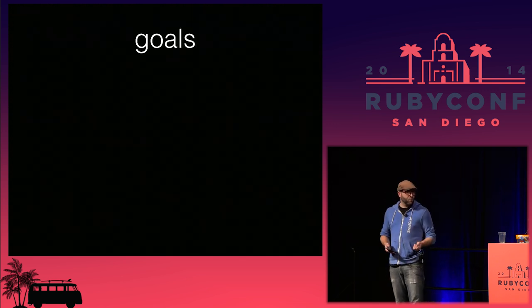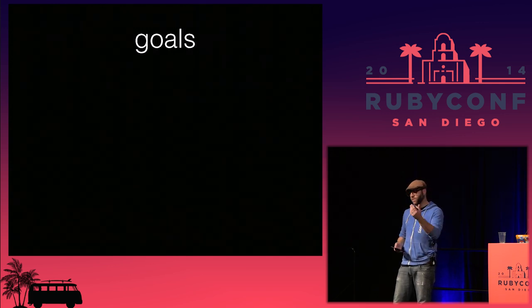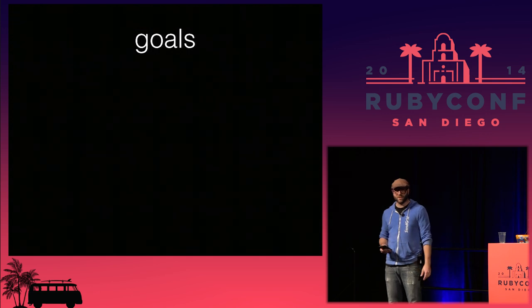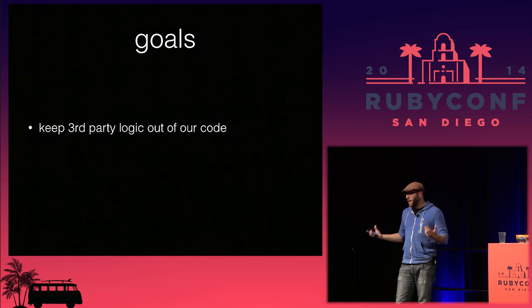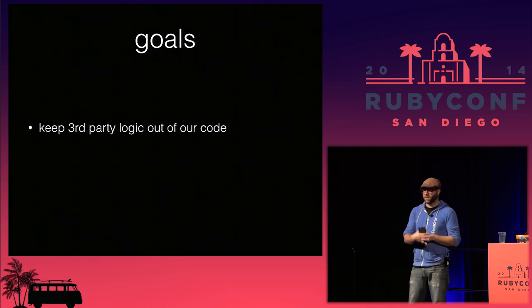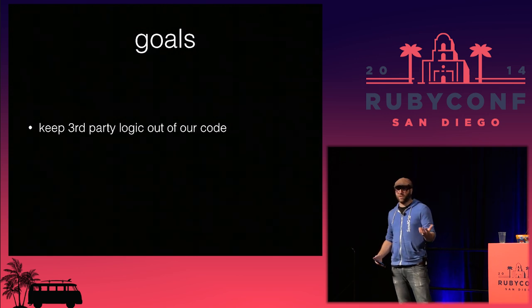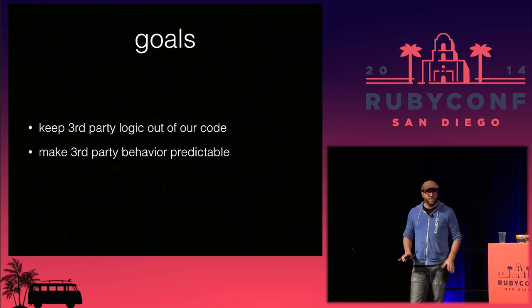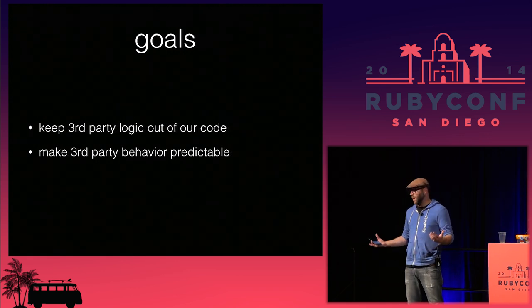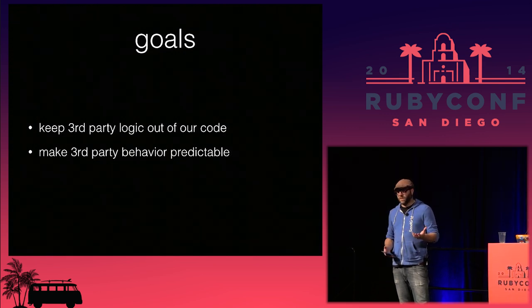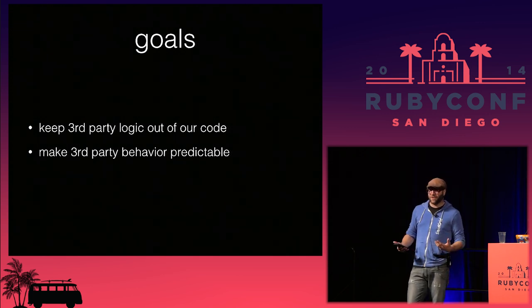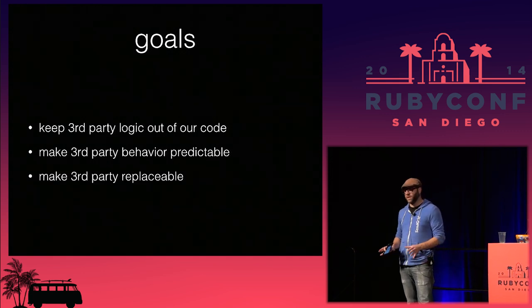When you're going back to do this refactor, or if you're building from scratch, what do you want out of your third-party implementations? The first thing is you want to keep the way the third-party implements their ideas out of the way you implement your ideas. There shouldn't be much correlation or crossover between that, because as soon as you buy into their implementation, you've lost flexibility that we as developers really like to have. The next part is making your third-party behavior predictable — and the last part is making your third-party replaceable.